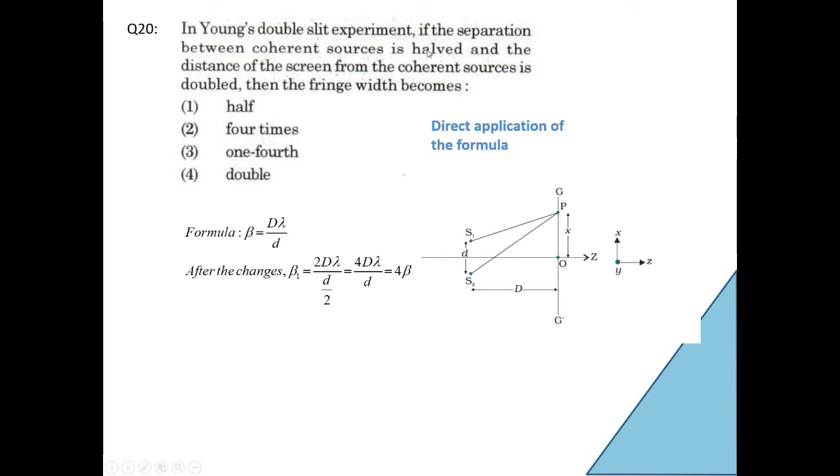After the changes, what are the changes? Separation between coherent sources is halved. So small d becomes d by 2. And the distance of the screen from the coherent sources is doubled. So capital D has become doubled. So 2D lambda. So 2D lambda by d by 2. Now you simplify. 4D lambda by d. Which is? But D lambda by d is beta. So this is 4 beta. So what is the answer? It will increase 4 times.